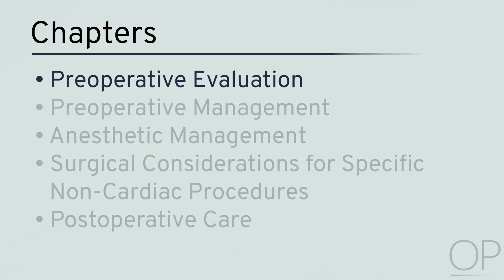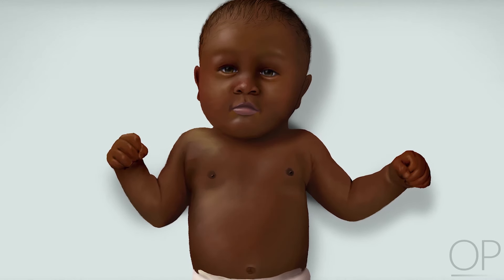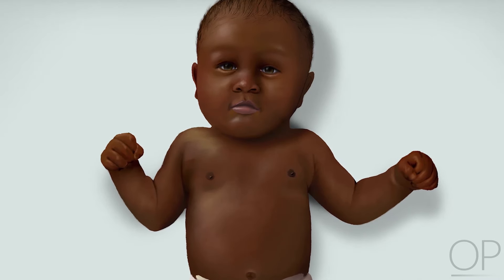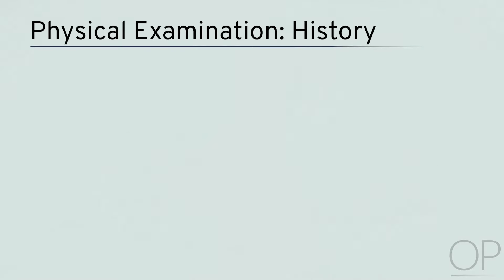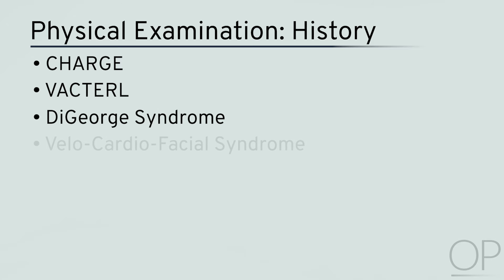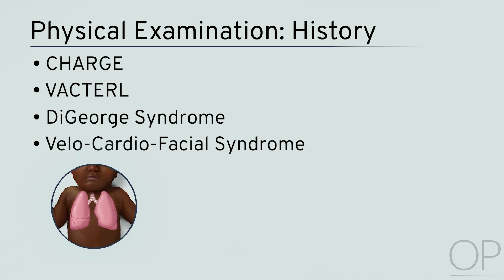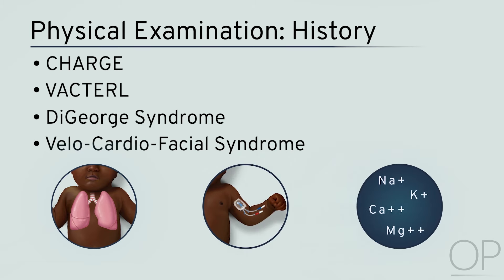Preoperative Evaluation. Evaluation begins with a thorough history and physical examination. The patient's history should be carefully reviewed for the presence of coexisting syndromes or chromosomal anomalies like CHARGE, VACTERL, and 22q11.2 deletion syndromes — such as DiGeorge or velocardiofacial syndrome — which can have significant implications for anesthetic management. Many syndromes are associated with airway abnormalities, difficult vascular access, or metabolic problems.